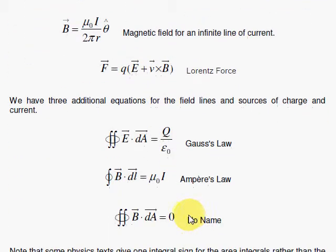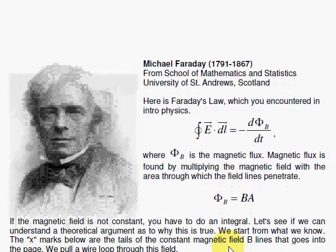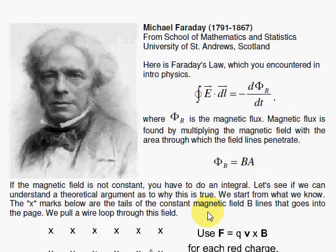And we've also seen these three laws here. Gauss's law, Ampere's law, and the Gaussian version in the magnetic field case gives you zero. We move on here to Michael Faraday and the derivation or pseudo-derivation of this law.